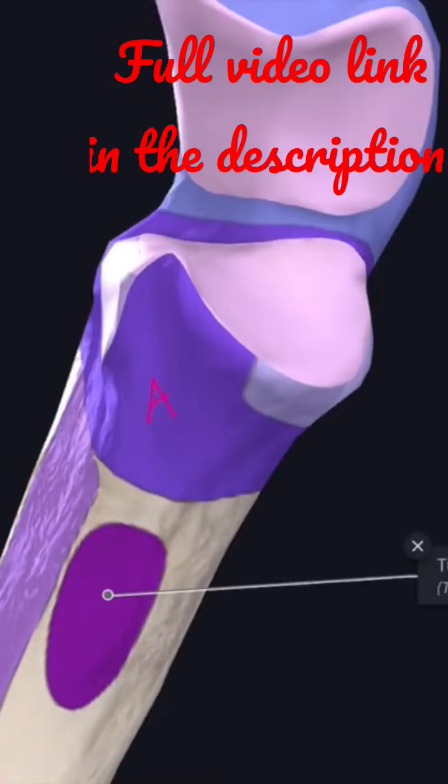We'll see about the anterior surface of the coronoid process. It is rough and triangular with an elevation known as the ulnar tuberosity in the lower part. The entire anterior surface of the coronoid process receives the insertion of the brachialis muscle.